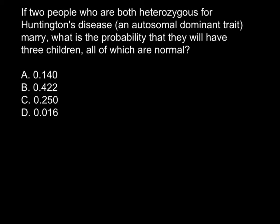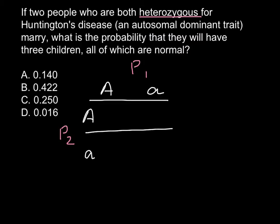So how are we going to approach this problem? We are going to build a Punnett square. So here would be parent 1 and parent 2 on this side. And we are told that both parents are heterozygous, so that means that we have capital A and small a here. And capital A, small a here also.